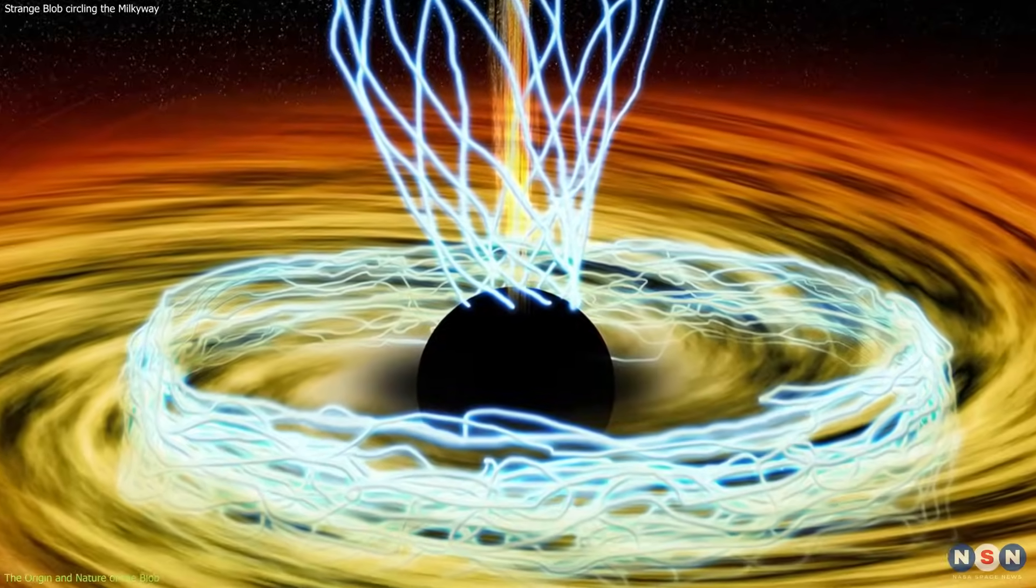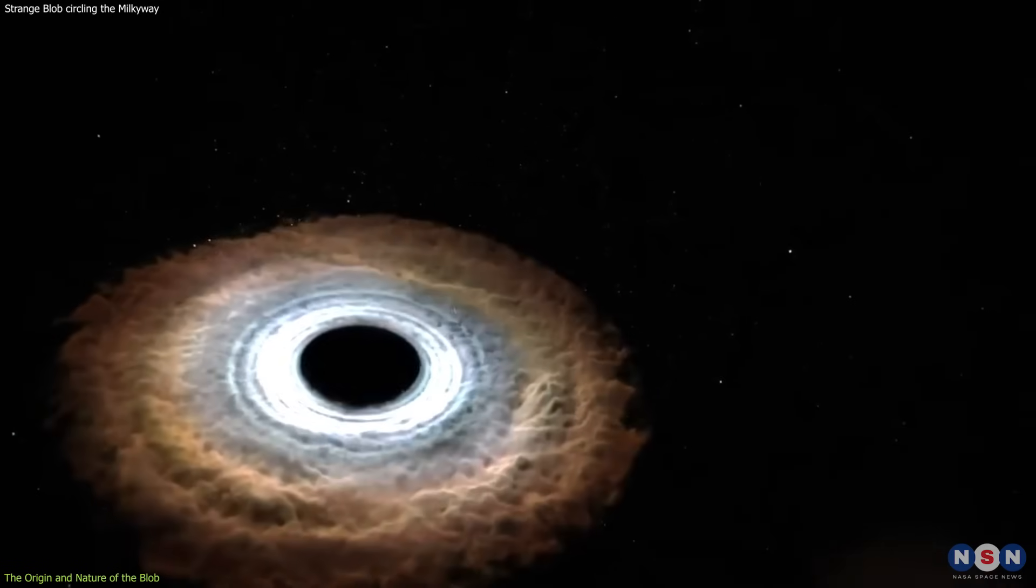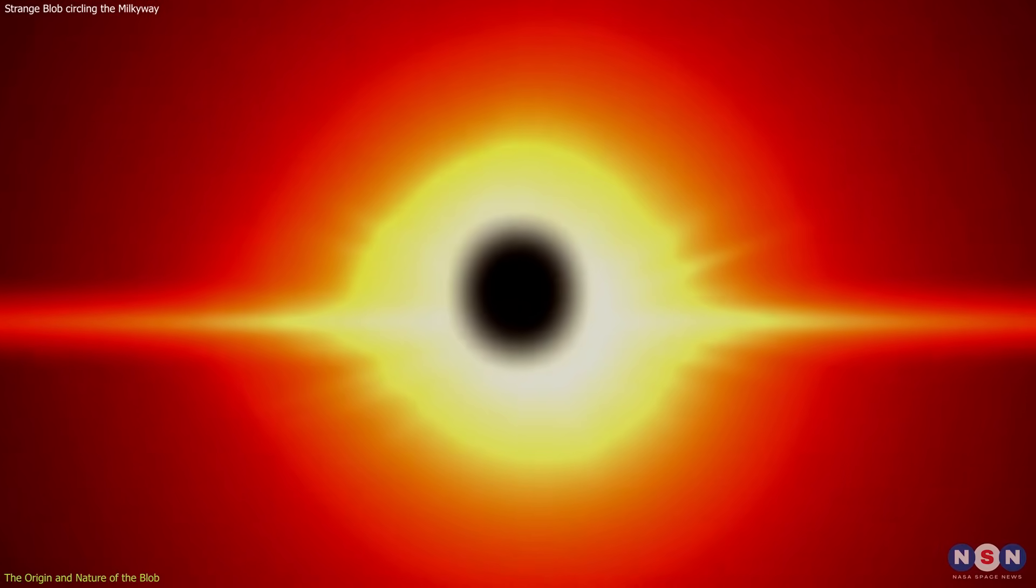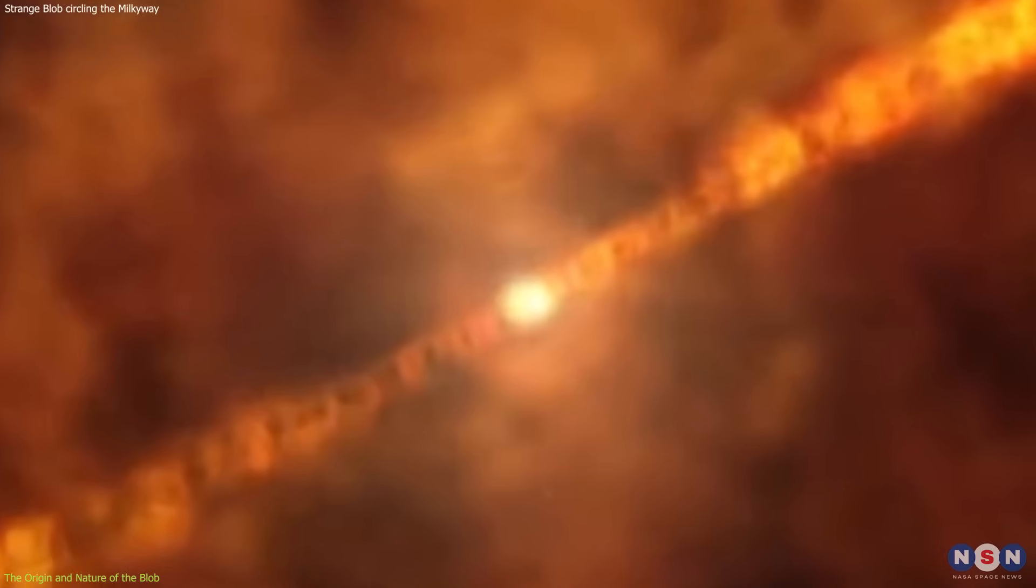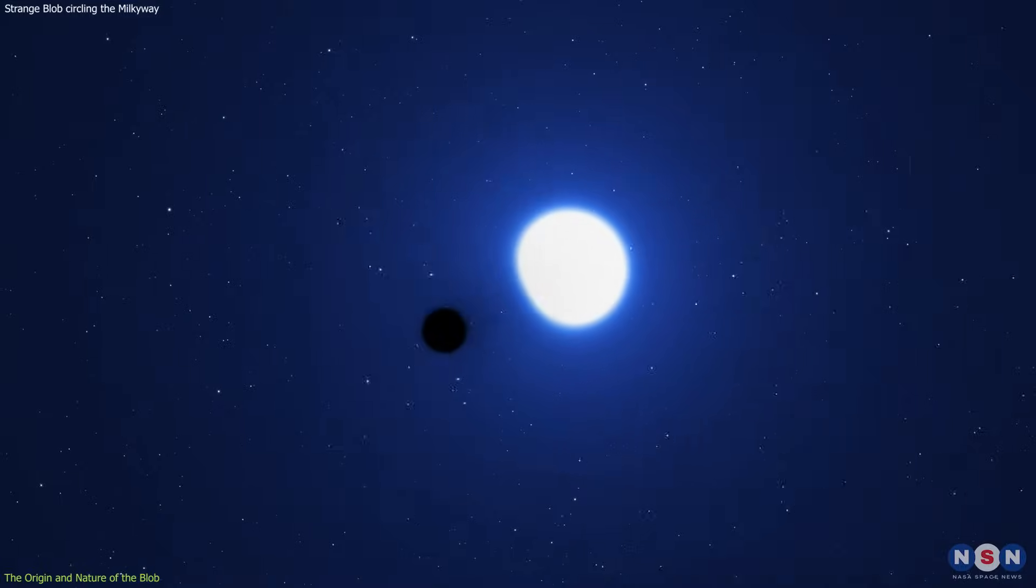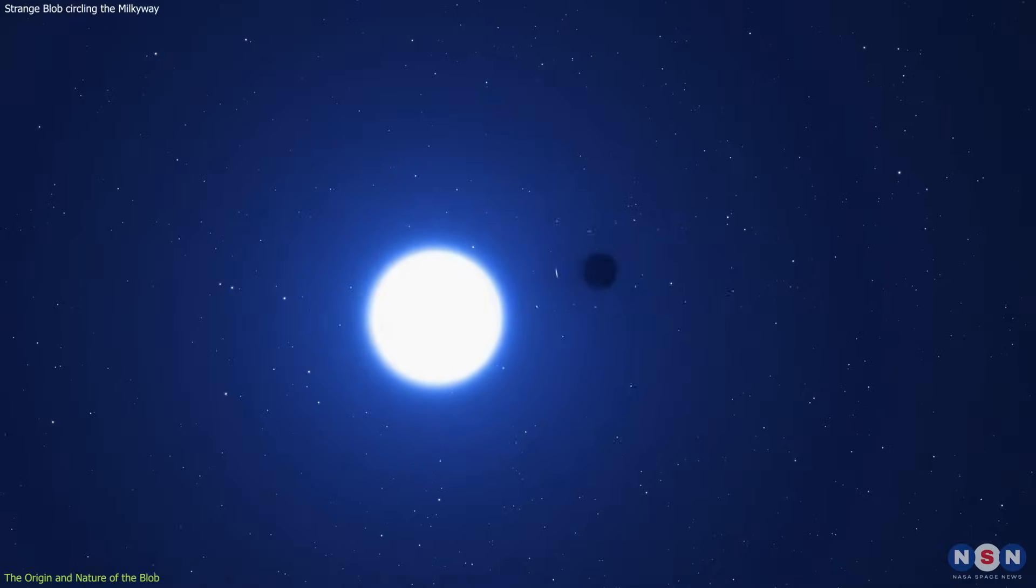Sometimes the magnetic field lines can break, allowing the black hole to feed on one of these clumps of gas, and releasing energy into the surrounding material, forming a hot bubble of plasma. This is what the blob of gas is, a hot bubble of plasma that is orbiting the black hole at about 30% of the speed of light.